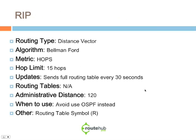Let's talk about some of the routing protocols. For the next three slides, we'll indicate the routing type, algorithm, metric, hop limit, and other details summarizing what each routing protocol does. RIP is a distance vector, Classful routing protocol.